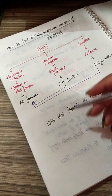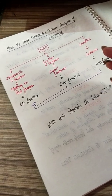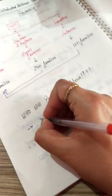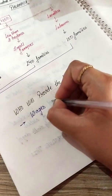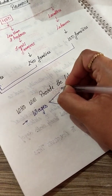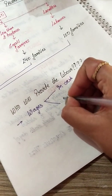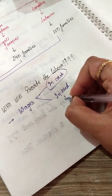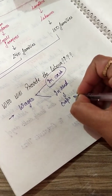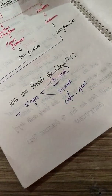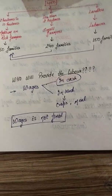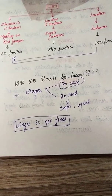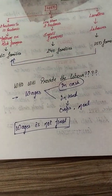So basically the SCs, STs, and small farmers work on the land of the large farmers. Now what about the salary system — do they get monthly wages, daily wages, or what? These laborers get wages in two different ways: wages in cash and wages in kind. In kind means sometimes they get crops, sometimes they get a meal.